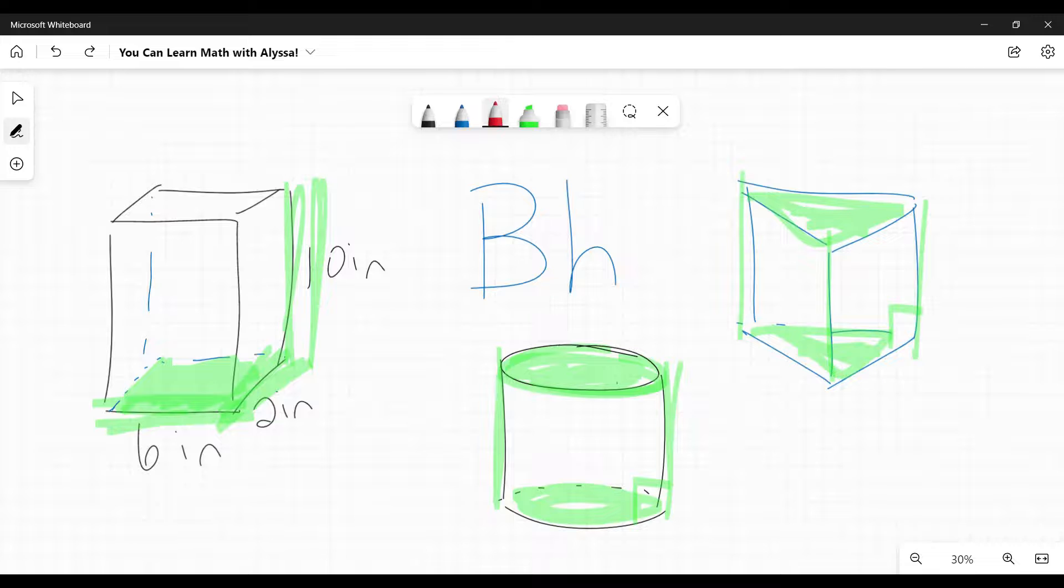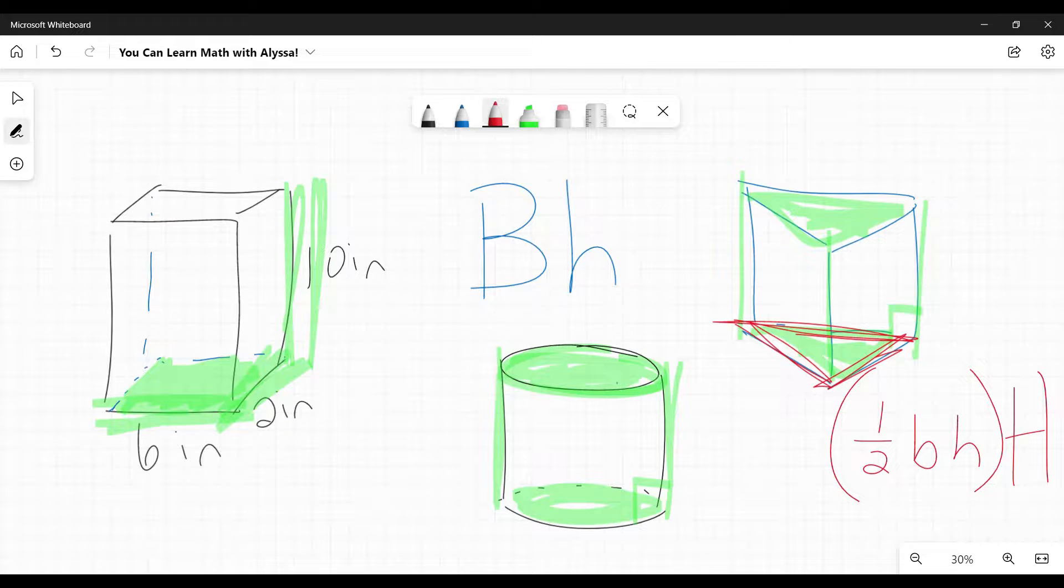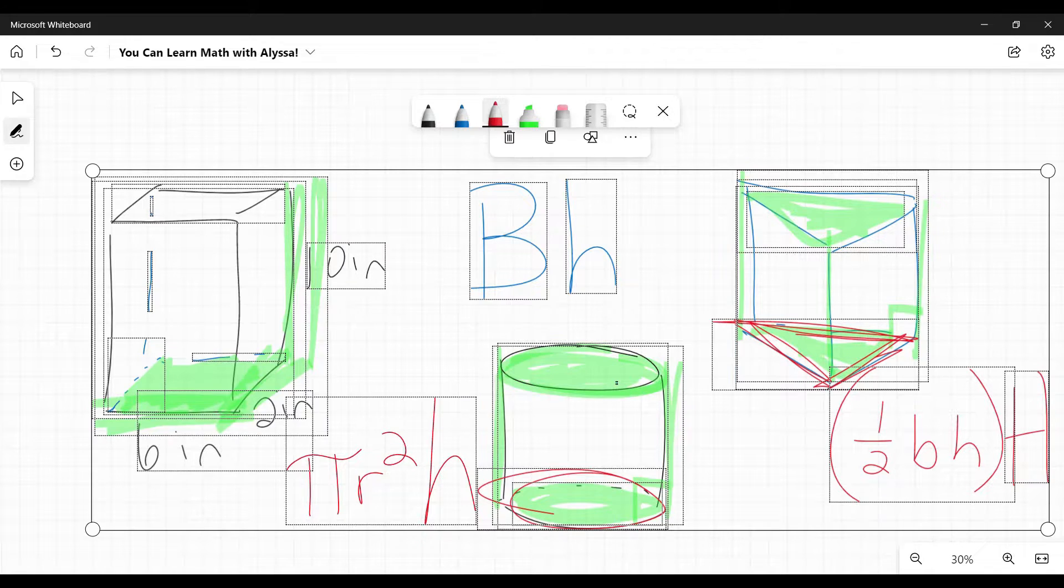So area of the base times the height. This is where your knowledge of area of two dimensional shapes comes in handy. You can't forget these things. They will come back to bite you if you do. If you need to refresh your course on those, video is in the link. Video link is in the description below. So for this example over here of the triangular prism, I would find the area of this base area of a triangle is one half its base times its height. And then I would multiply by the height of the prism over here with the circle. The area of a circle is pi r squared. And then I would multiply times the height when that's given to me.